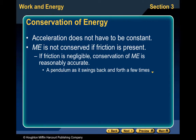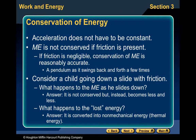Acceleration does not need to be constant, but there must be no additional external forces acting. Mechanical energy is not conserved if friction is present because friction is an external force. If friction is negligible, conservation of mechanical energy is reasonably accurate. A pendulum swinging back and forth conserves energy for a few swings, but eventually friction causes it to lose its swing. For a child going down a slide with friction, mechanical energy decreases — it converts into thermal energy (heat from friction between pants and slide) and possibly some sound energy.